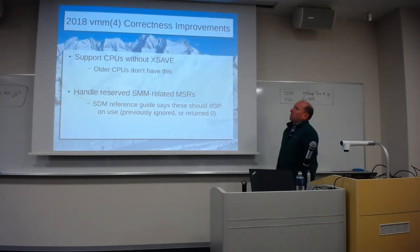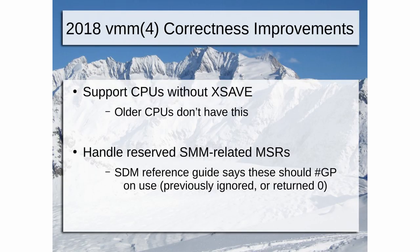We now support CPUs without XSAVE — older CPUs don't have this. And the SMM-related MSRs: the reference guide says these should cause a GP, a general protection violation, on use outside SMM. We previously ignored these or just returned zero, which was not the correct behavior. The previous behavior was harmless, but we weren't actually doing it correctly, so we fixed that.